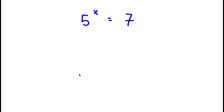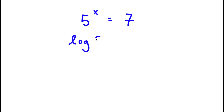In this problem, I have 5 to the power of x is equal to 7. The first thing I'm going to do is take the log on both sides. So now I have log 5 to the power of x is equal to log 7.